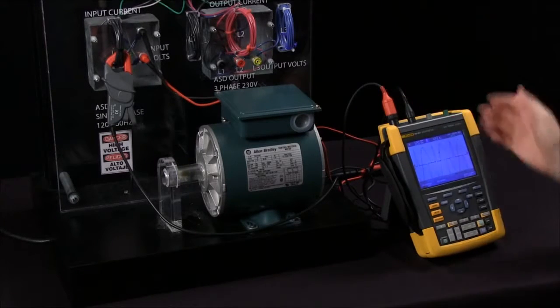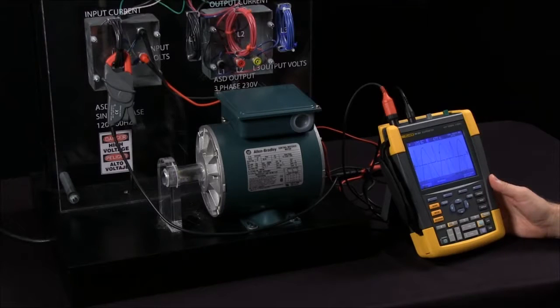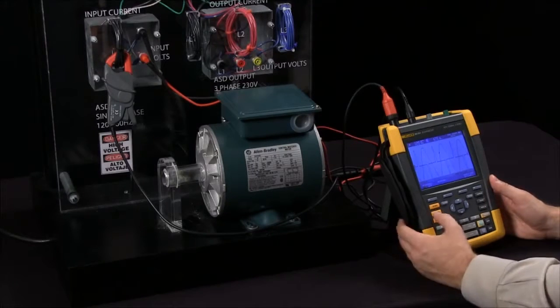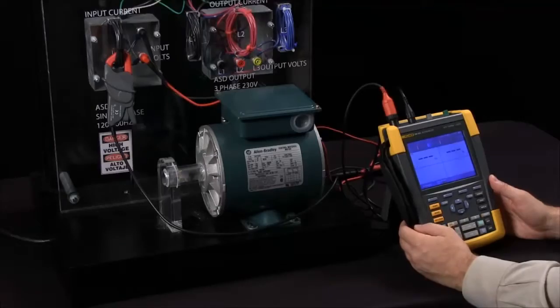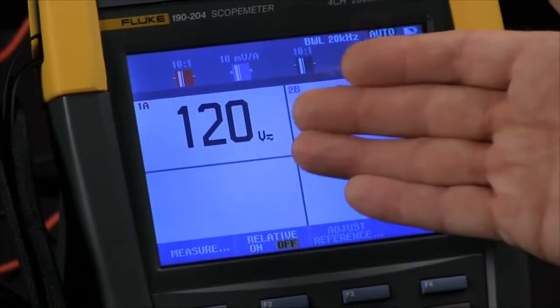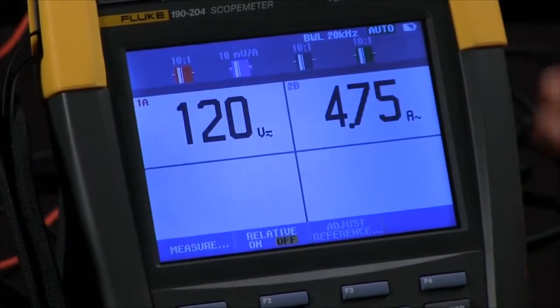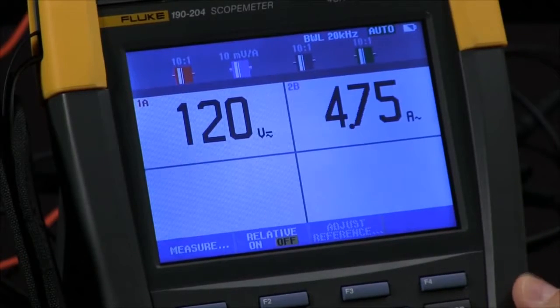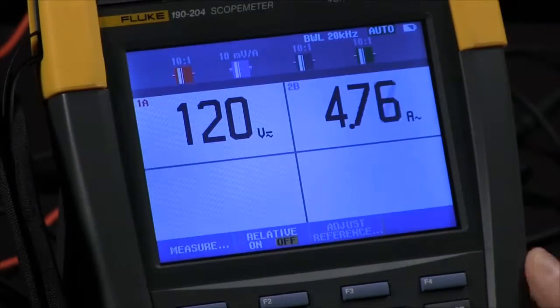In your scope mode we're looking at the input voltage and current to the drive. I can also shift into meter mode and now we're just displaying this as a numerical value. So there are my 120 volts on the input of the drive and I'm also drawing 4.75 amps.